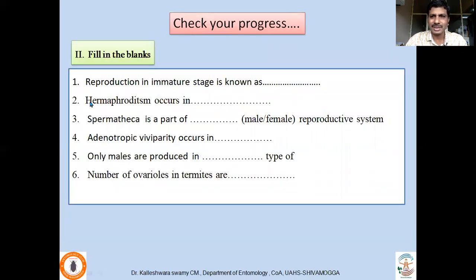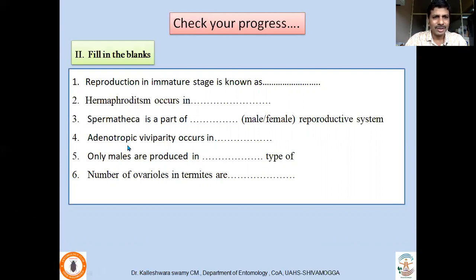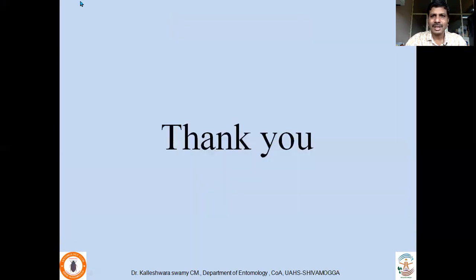Let us look back at some questions: Reproduction in an immature stage is known as — ? Arrhenotoky occurs in — ? Spermatheca is a part of which reproductive system — male or female? Seminal vesicle, spermatheca, spermathecal gland — you may get confused whether these are parts of male or female reproductive system, so read two or three times to better understand. Adenotrophic viviparity occurs in which group of insects? Only males are produced in which type — arrhenotoky or thelytoky? Number of ovarioles in termites is — ? Thank you very much. If there are any questions, you can post below or email me.